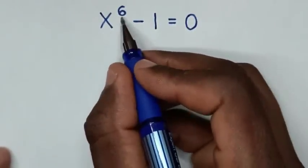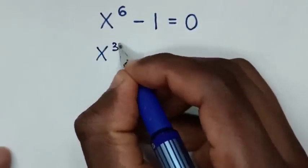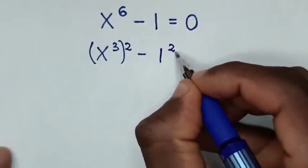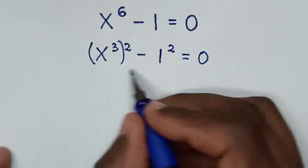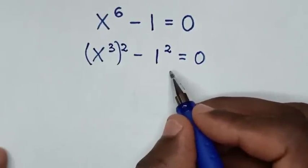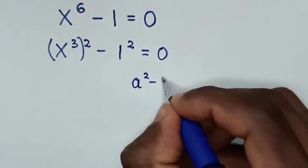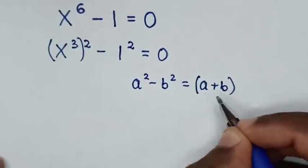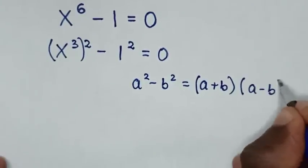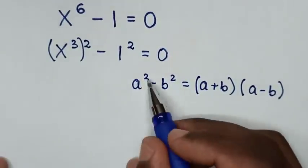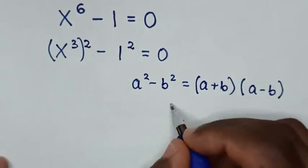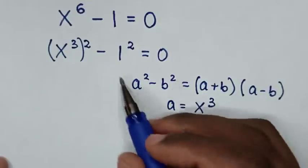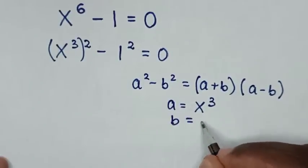So, x power 6 can be written as x power 3 bracket squared, and 1 is the same as 1 squared, so the equation becomes (x³)² minus 1² equals 0. This part is in the form of a perfect square. We'll apply the rule a squared minus b squared equals a plus b times a minus b. Comparing, a equals x power 3 and b equals 1.